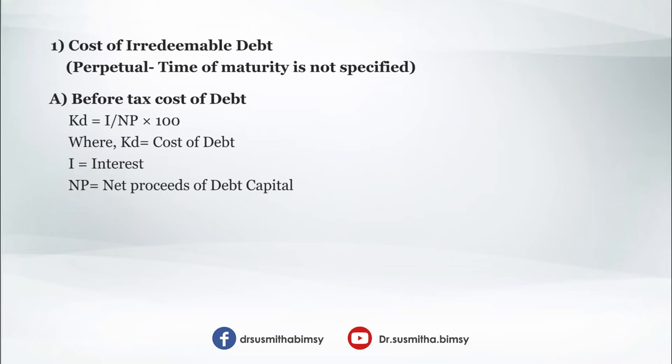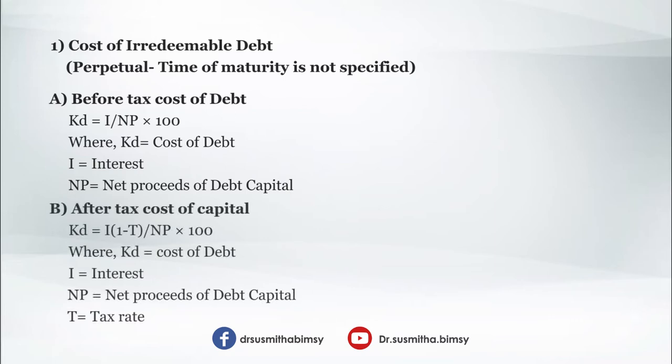Under the cost of irredeemable debt, we need to find the before-tax cost and after-tax cost of debt. The formula for before-tax cost of debt: Kd = I / NP × 100, where Kd is cost of debenture, I is interest, and NP is net proceeds of debenture capital. For after-tax cost of capital: Kd = I × (1 − t) / NP × 100, where t is the tax rate.